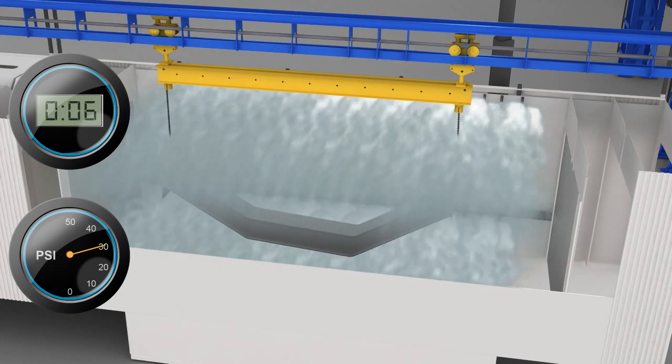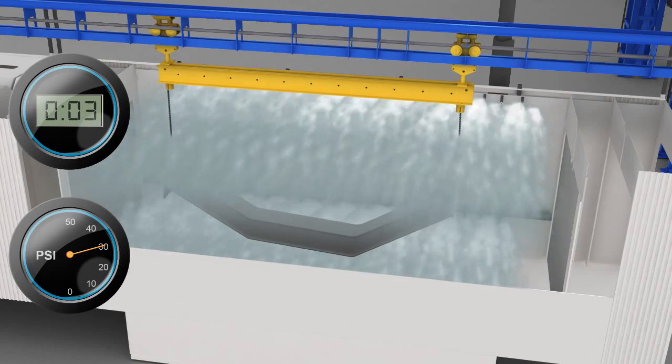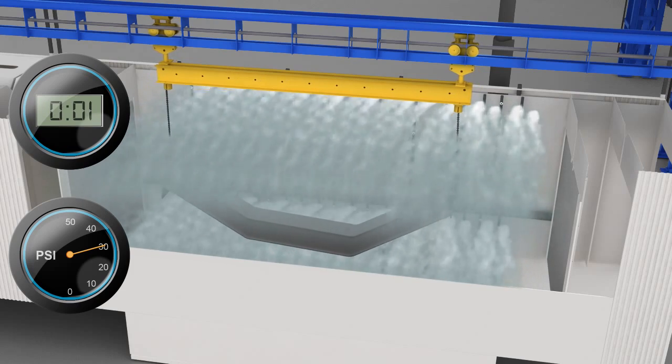In the wash zone, a larger part receives 30 pounds of pressure for 90 seconds, while the smaller part behind it will receive only 20 pounds of pressure.